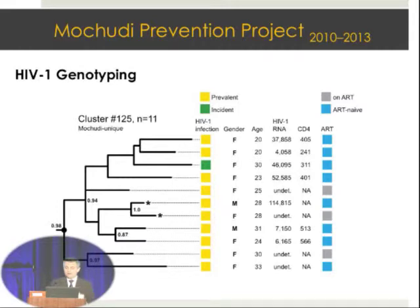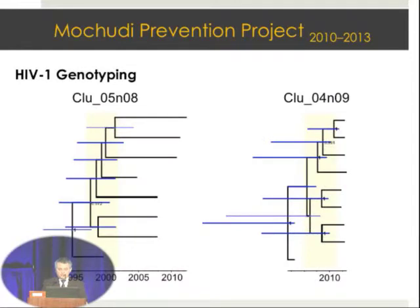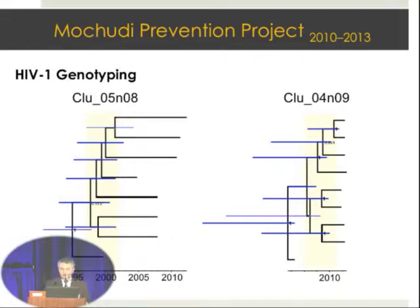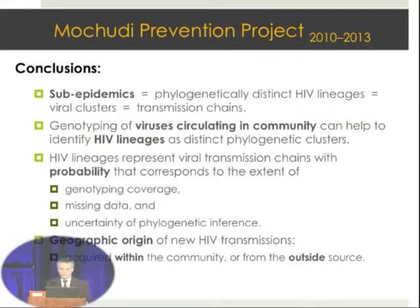Individual clusters were analyzed for social, demographic, and clinical parameters. In some cases, two sequences with high bootstrap support belonged to the same household, with green indicating an incident case within that cluster. We also addressed when the majority of transmissions happened within each viral lineage as a sub-epidemic. In one example, the majority of transmissions occurred around year 2000, while in a second cluster, the majority of transmissions happened between 2008 and 2010.